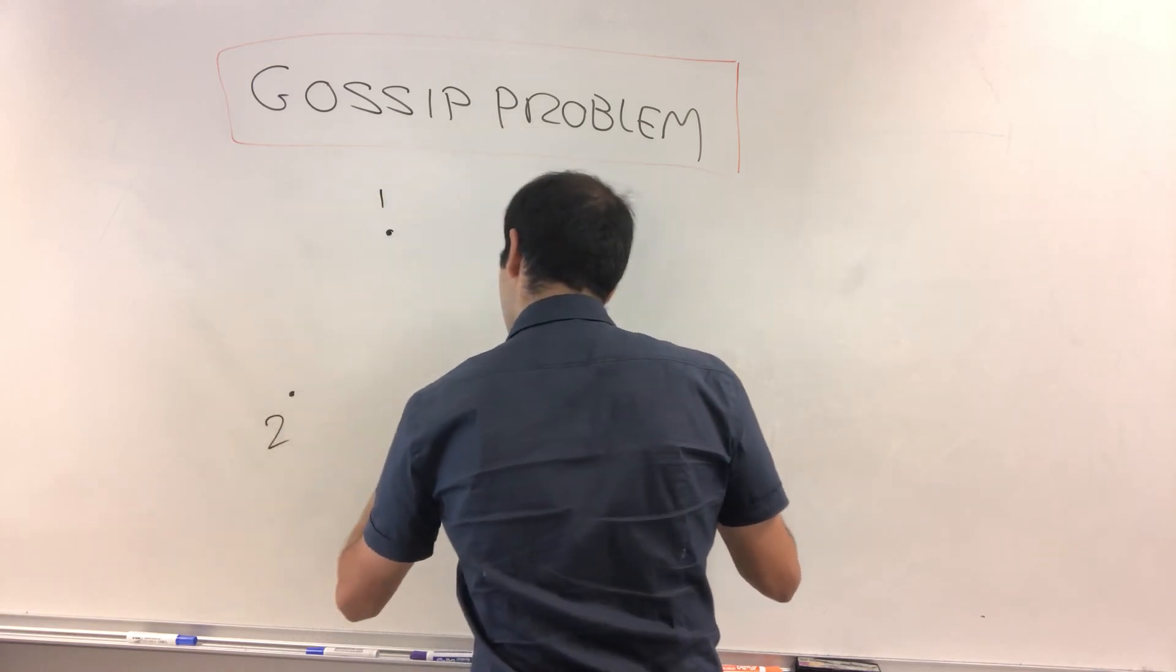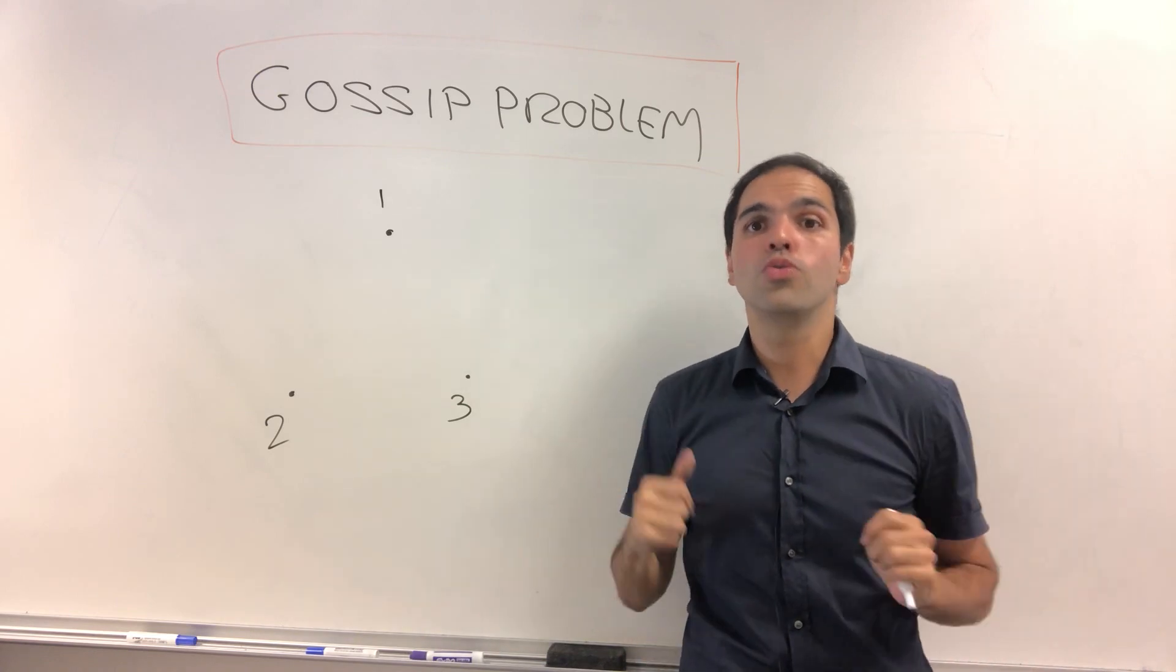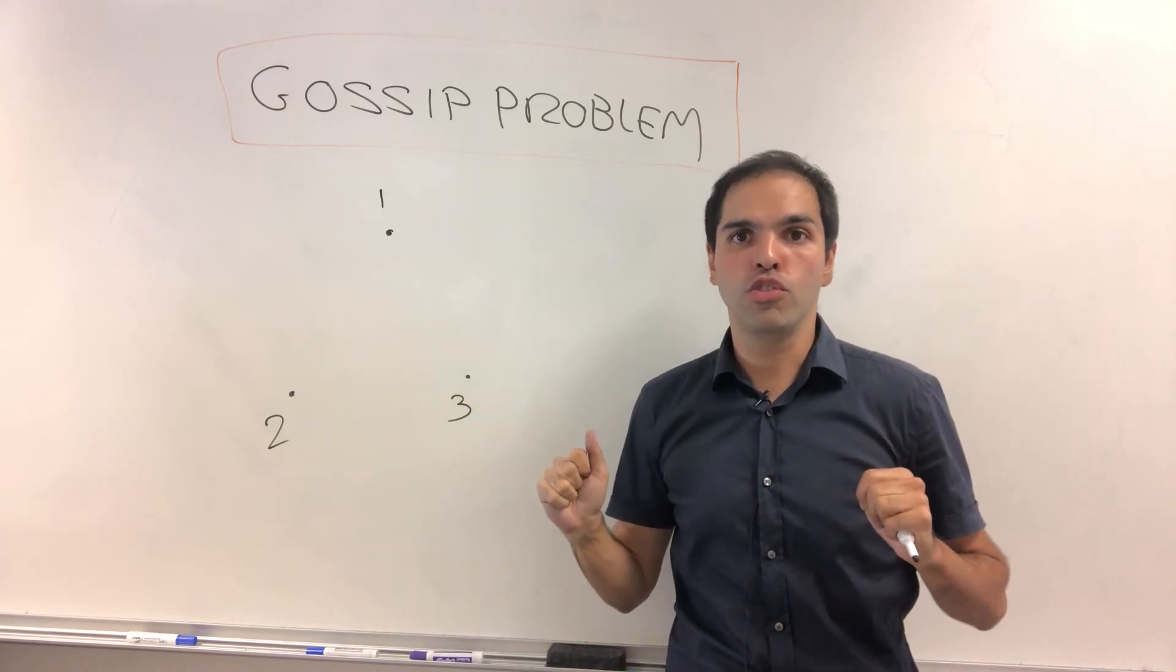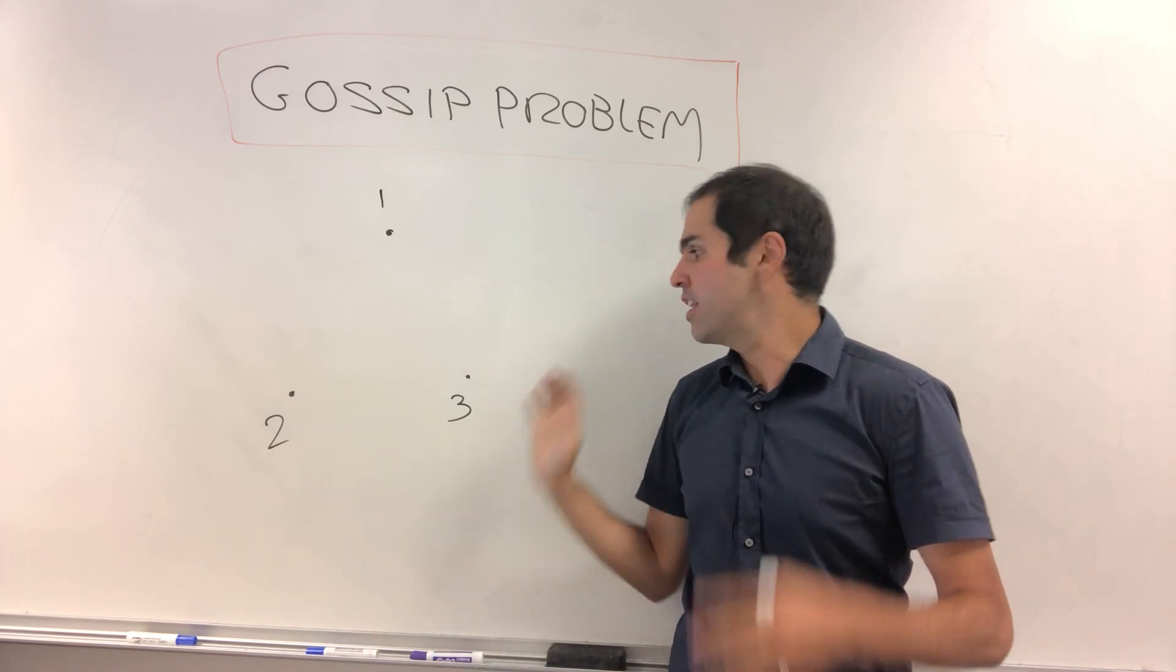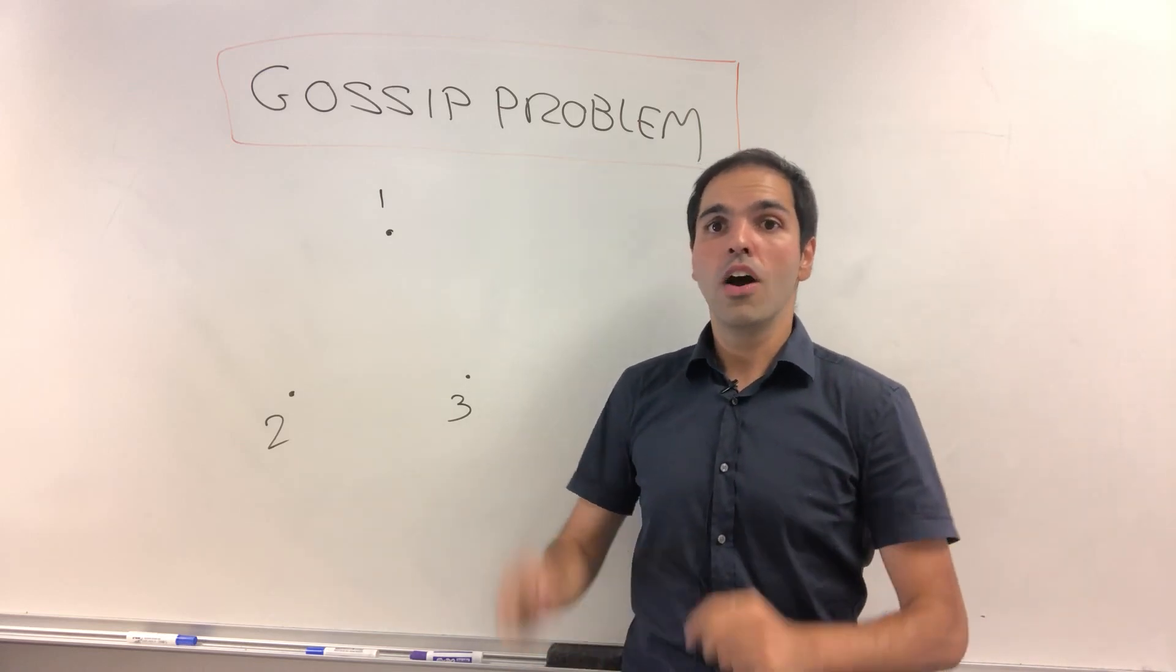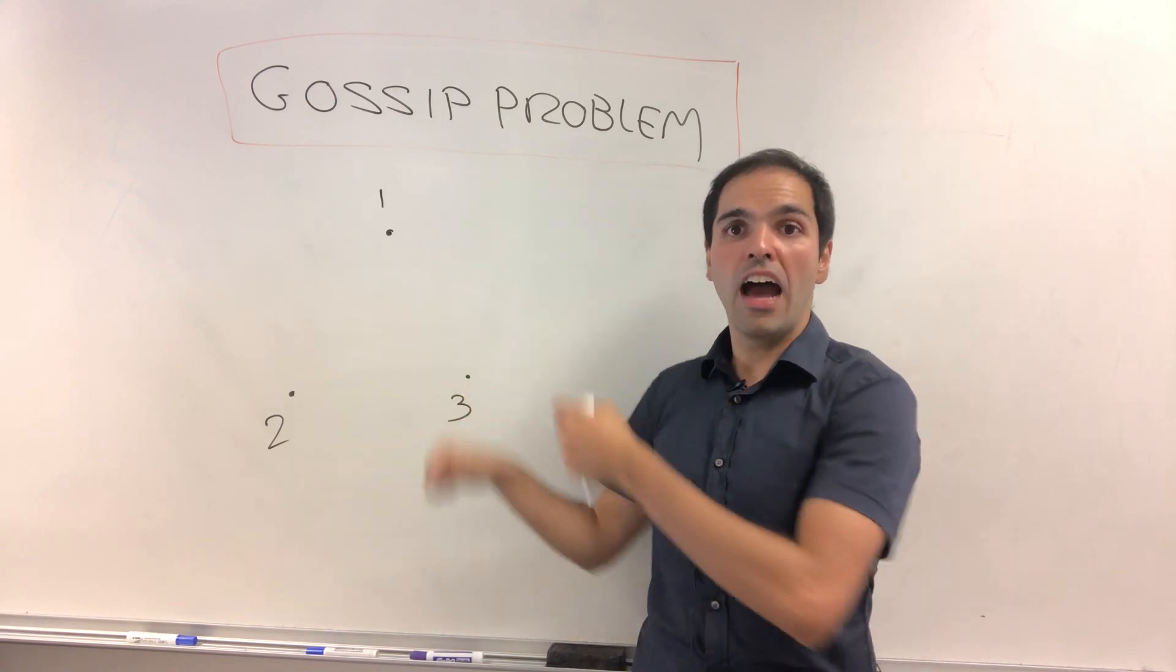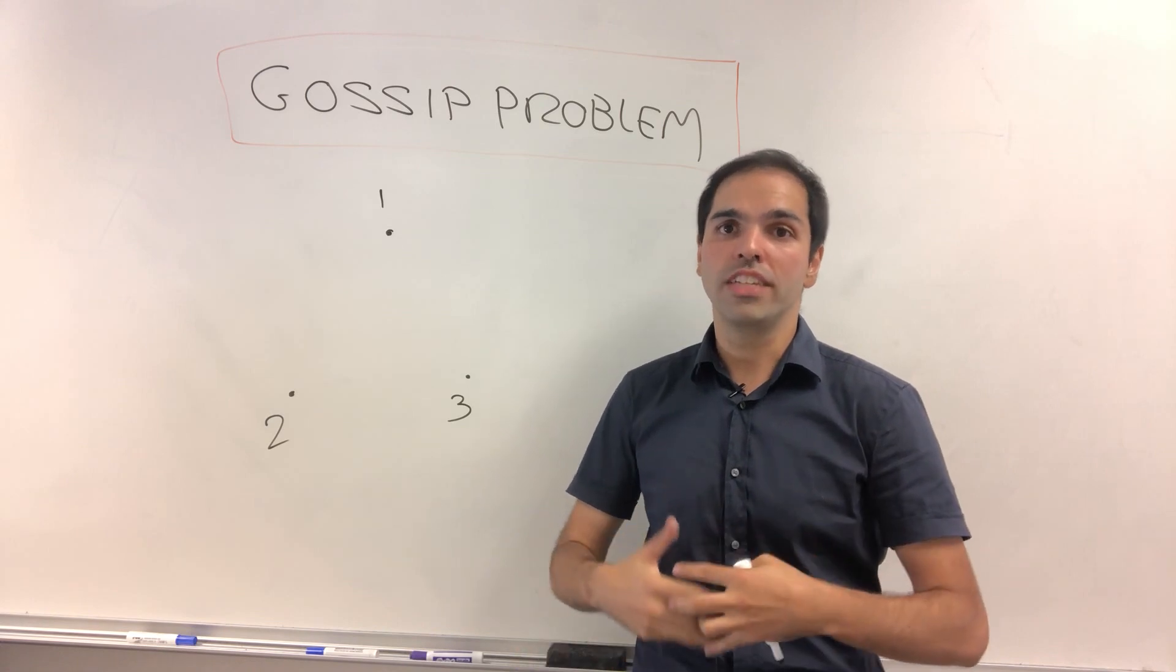and each of them knows a secret or knows a gossip. For example, one knows that Pyam loves YouTube, two knows that Pyam loves math, and three knows that Pyam loves food. The question is, what is the minimum number of calls they have to make to each other so that everyone knows each other's gossip?